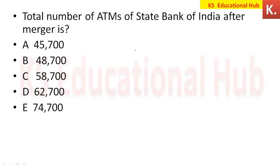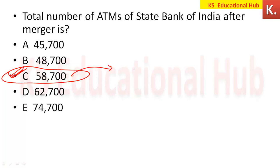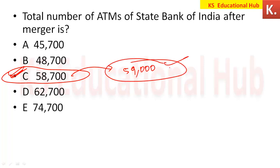What is the total number of ATMs of State Bank of India after the merger? The actual figure is 58,700, but if asked approximately, you can say 59,000. This is the total ATM count of SBI after the merger.